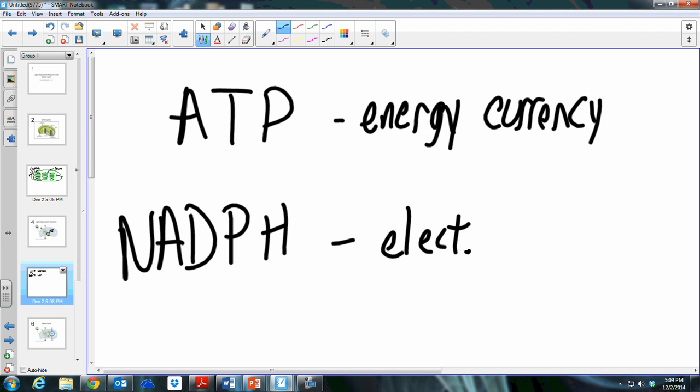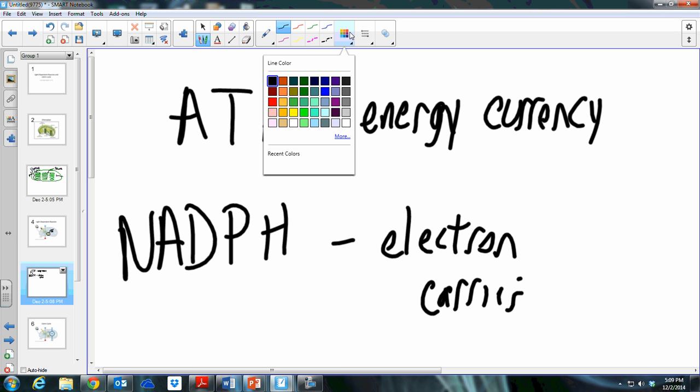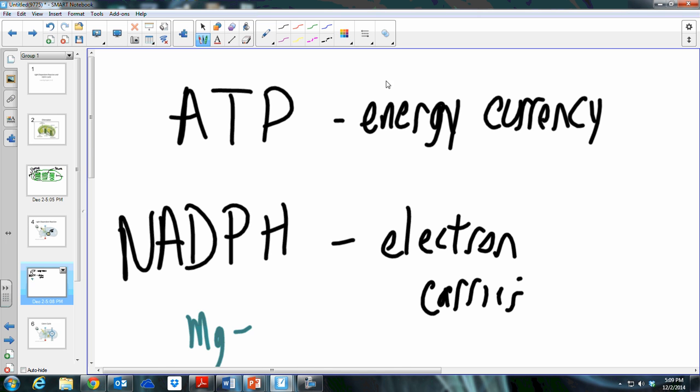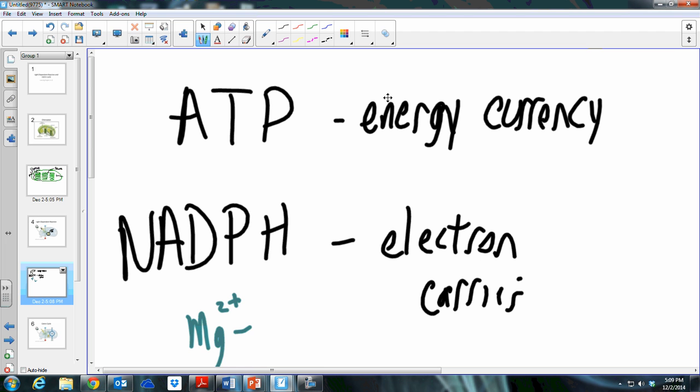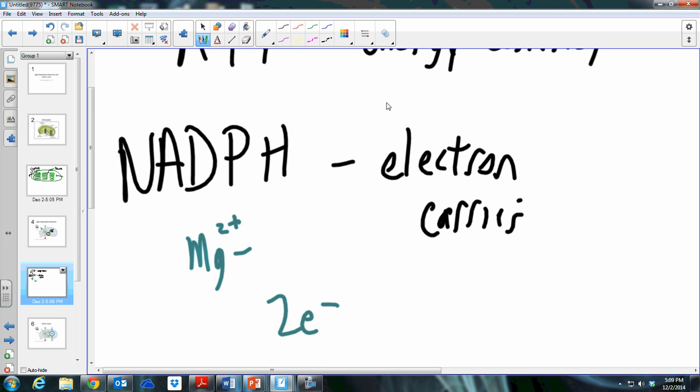NADPH is specifically an electron carrier. Magnesium has two electrons in its outer shell, and magnesium readily lets go of those and becomes an ion. Those two electrons are excited, they're full of energy, and NADPH works to capture those electrons so that the cell can do something with the energy from those electrons. NADPH and ATP are the main goal of this light-dependent reaction.